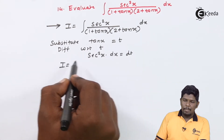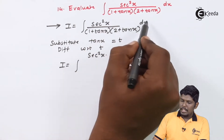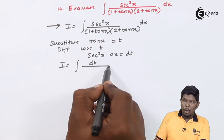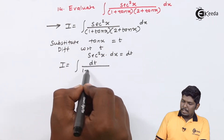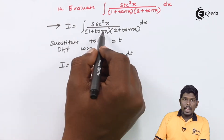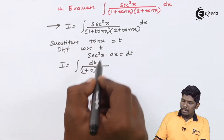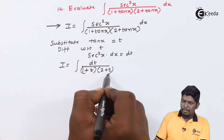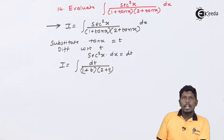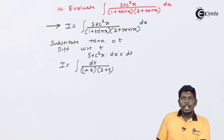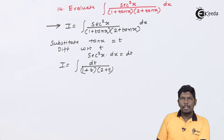The integral becomes dt upon (1 + t)(2 + t). Here we have 2 terms present in the denominator which are in product form, and this can be converted into partial fraction form.